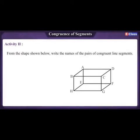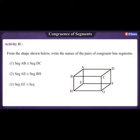Activity 2: From the shape shown below, write the names of the pairs of congruent line segments. 1. Segment AB is congruent to segment DC. 2. Segment AE is congruent to segment BH. 3. Segment EF is congruent to segment HG. 4. Segment TF is congruent to segment CG.